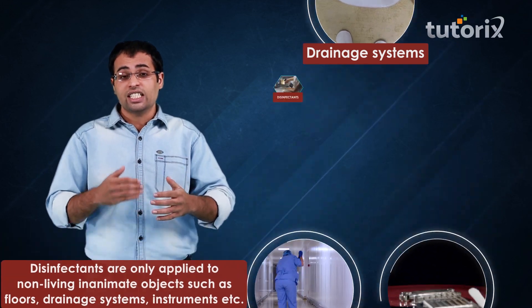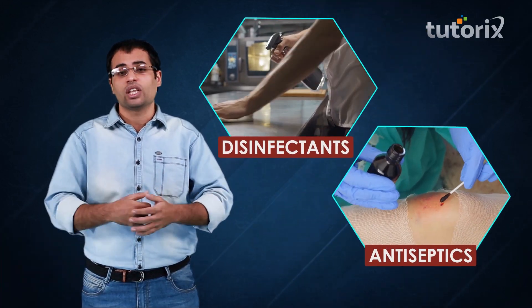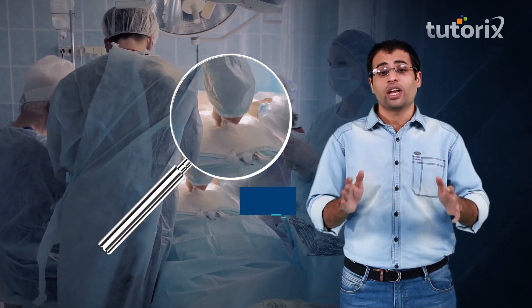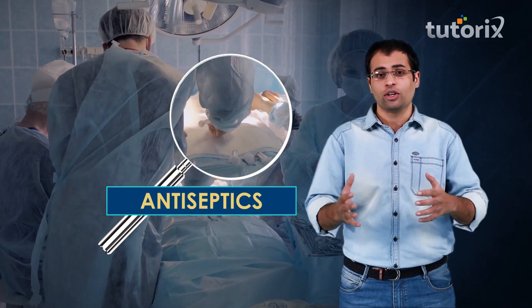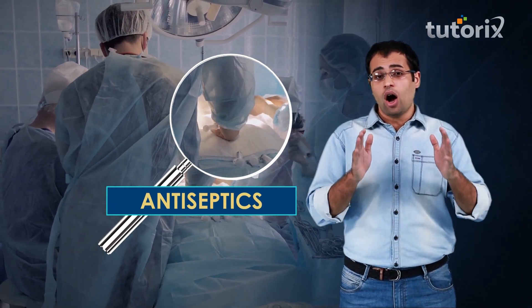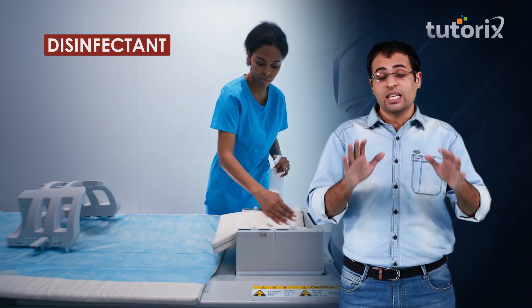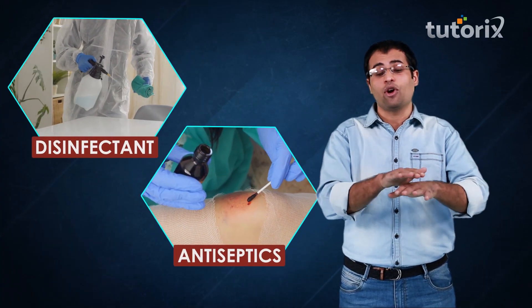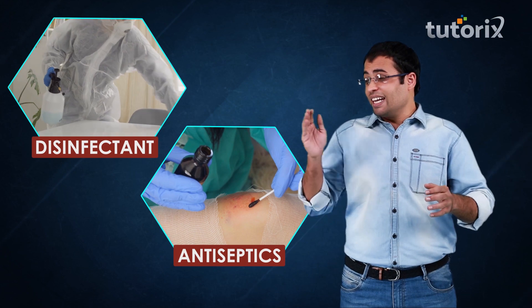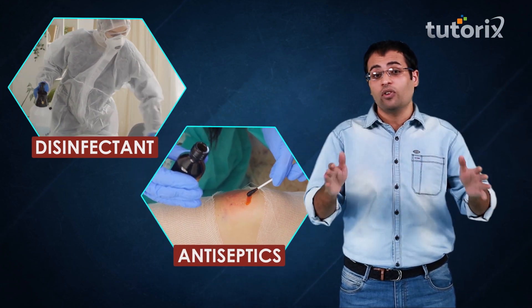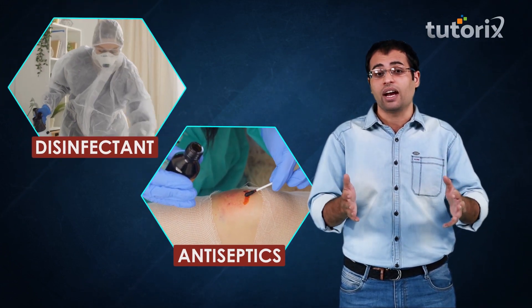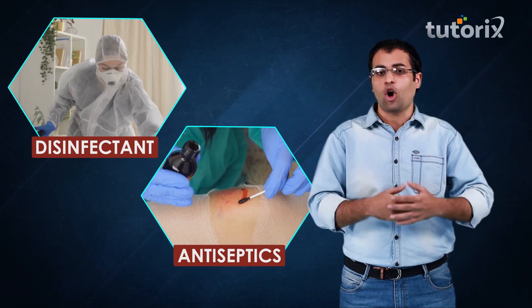Let me differentiate disinfectants from antiseptics with the help of an example. Suppose a doctor has to carry out a surgical operation — the doctor will put antiseptic on the site of the wound on the patient's body to kill microorganisms, however he will sterilize the operation table with the help of a disinfectant. In simpler terms, antiseptics are applied on the surface of a living tissue, whereas disinfectants are applied on the surface of non-living objects.